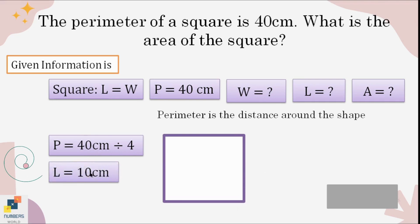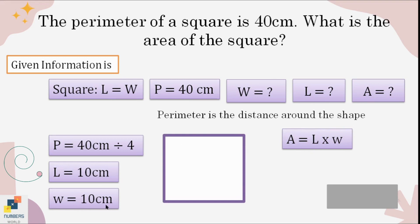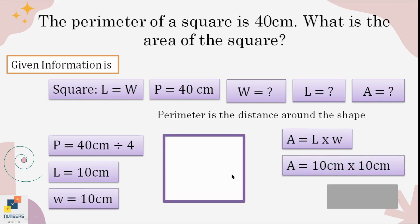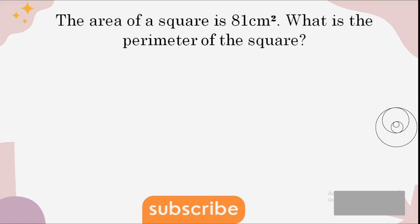40 ÷ 4 = 10 centimeters, so the length is 10 cm. Since it's a square, the width is also 10 cm. Now both components needed for area are present: write the formula, put in the values, and the area equals 100 centimeters squared.